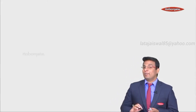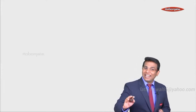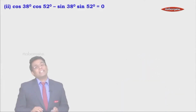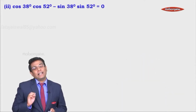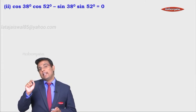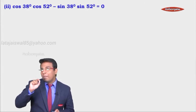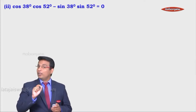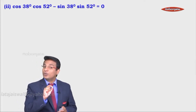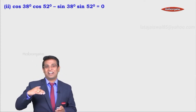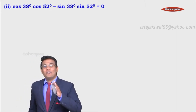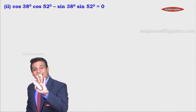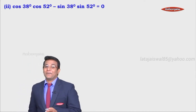An interesting and very simple sum based on trigonometrical ratios of complementary angles. It says cos of 38 degrees into cos of 52 degrees minus sin of 38 degrees into sin of 52 degrees is equal to 0. We are supposed to prove that it is equal to 0, meaning we have to prove the left hand side is equal to the right hand side.